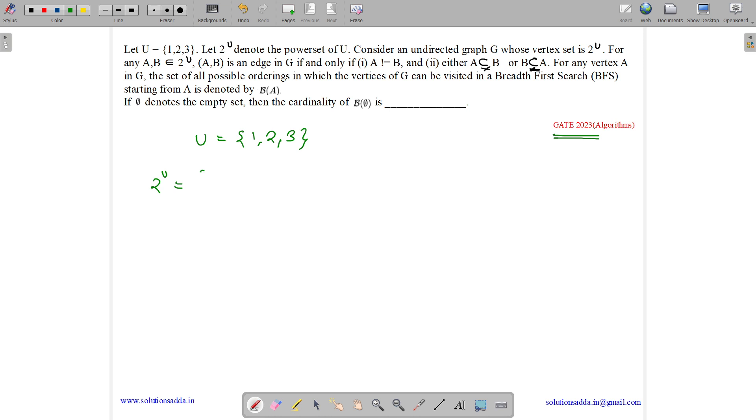So what is 2 to the power U? 2 to the power U will have elements like phi, {1}, {2}, {3}, {1,2}, {1,3}, {2,3}, and {1,2,3}. It will have 8 elements.